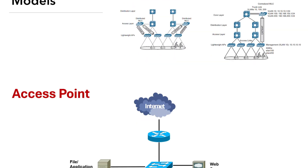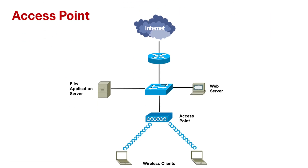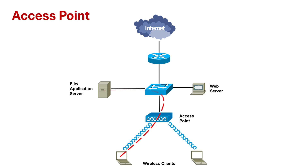In wireless networking, access points play a crucial role in extending connectivity to wireless clients. Wireless networks rely on access points to connect wireless devices to wired networks. For example, in a small enterprise network, a client needs to connect to a file or application server. The traffic has to go via the wireless network, then to the wired network, where the server is connected to a wired switch.